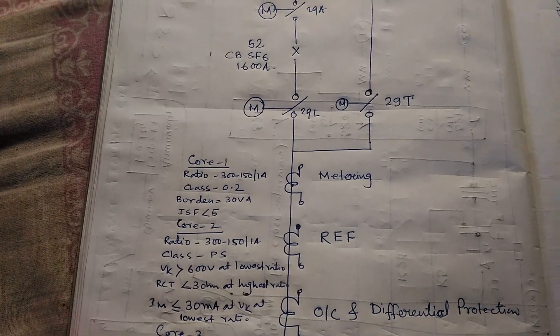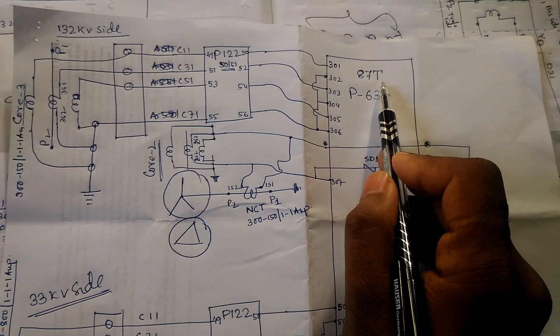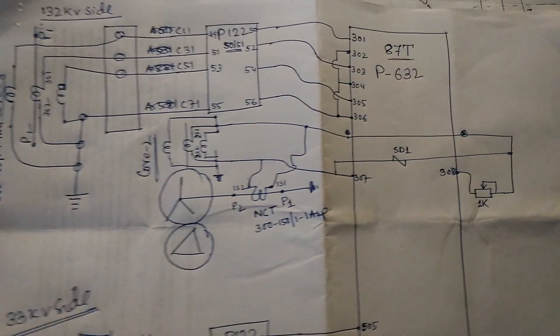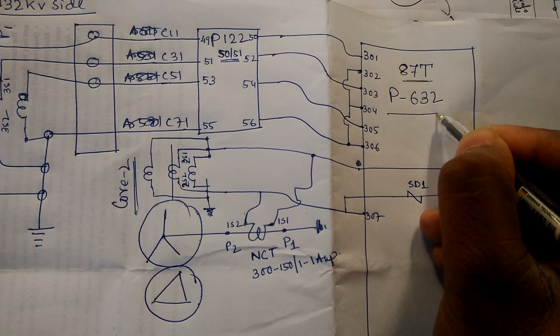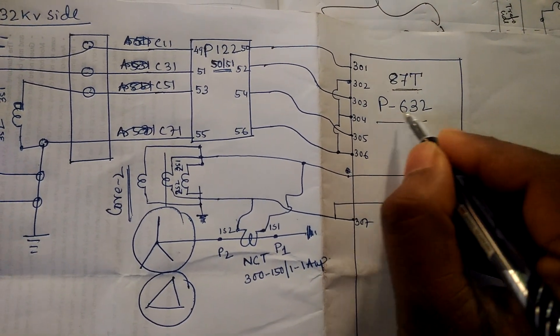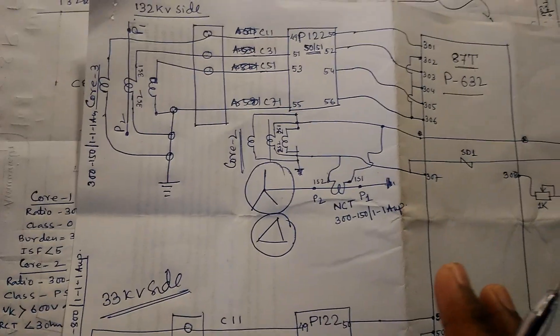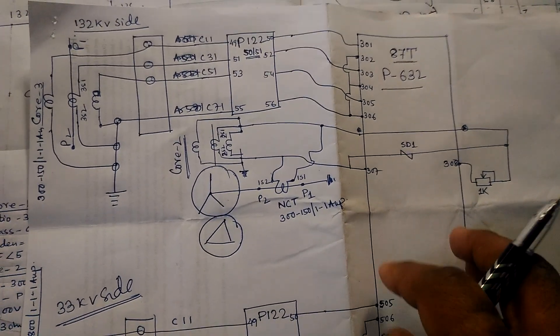Now we discuss the second topic: REF and differential protection. The 87-80 relay symbol is used for differential protection. We are using the P632 Micom relay at the substation — the P632 Micom differential relay — and we will discuss how to connect this relay for differential protection.